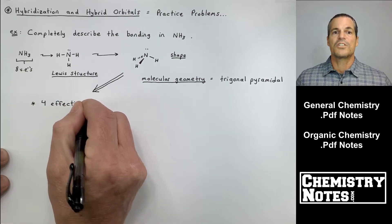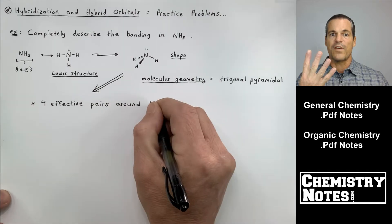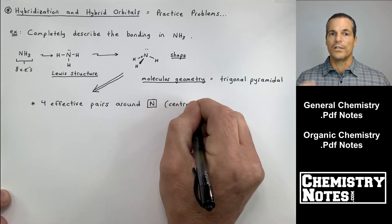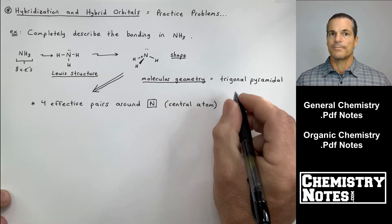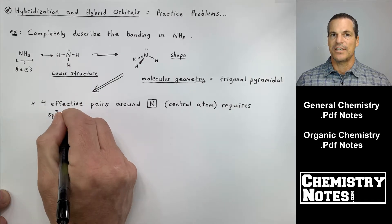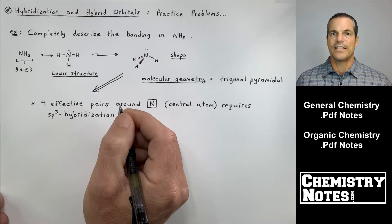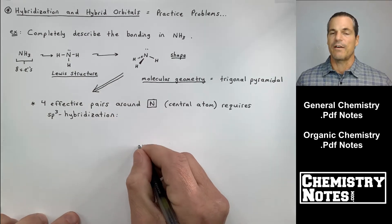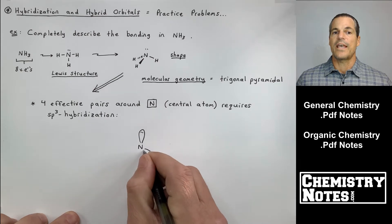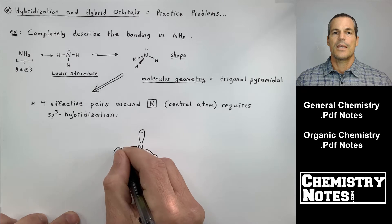So when you look at the shape of NH3, you see that there are four effective pairs around nitrogen, three hydrogens and one lone pair. Four effective pairs, we need to adopt SP3 hybridization. We have to have four identical hybrid orbitals. So we have the SP3 orbitals. I'm now drawing those SP3 lobes or SP3 orbitals.